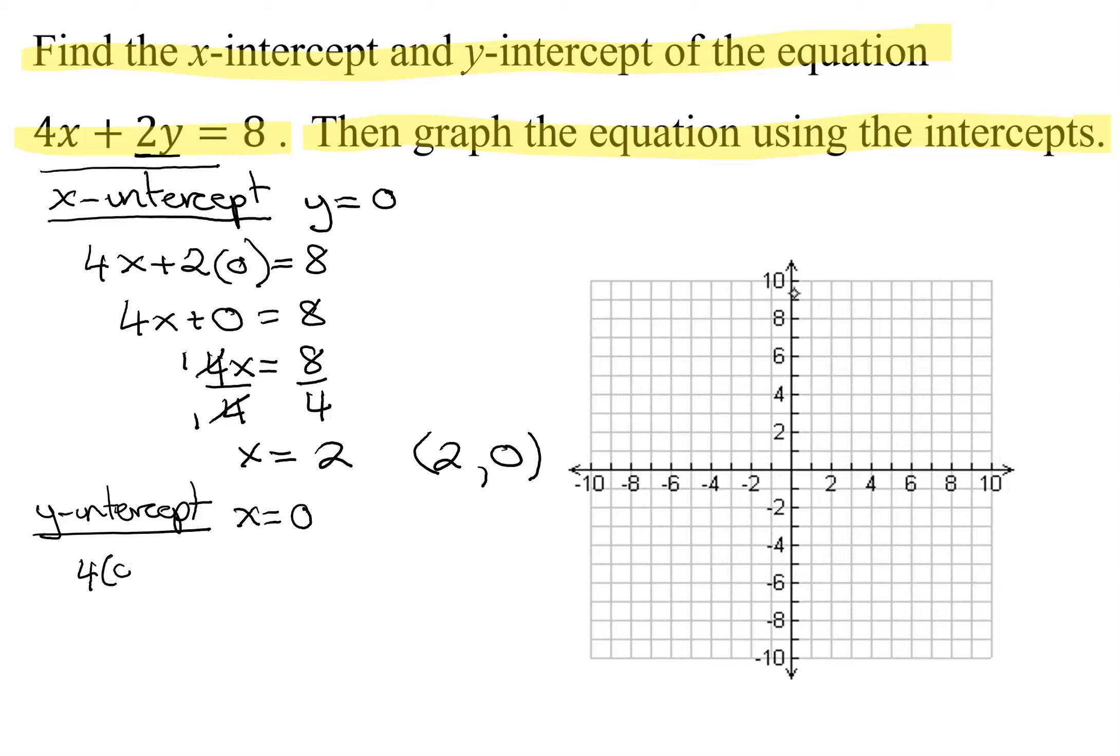So again, I'm going to plug it into the original equation. 4 times x is 0, plus 2 times y equals 8. So 4 times 0 is 0. 0 plus 2y is just going to give me 2y equals 8. Divide both sides by 2, and I'm going to get y equals 4.